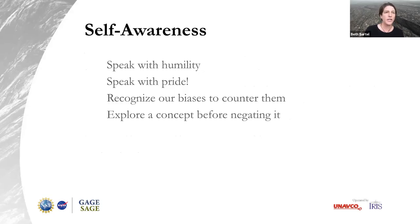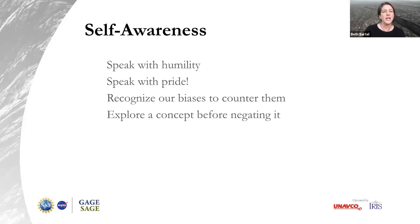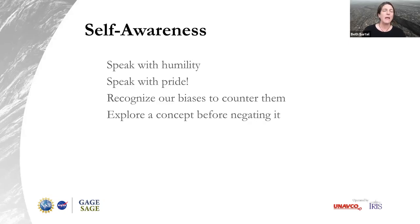Here's another way to build inclusion: speak with humility, and speak with pride — especially if speaking from an underrepresented identity. Recognize our biases to counter them — go do that Project Implicit quiz, then do the follow-on work to identify where those biases come up and how they affect our behavior, so we can catch ourselves and change. We can also explore a concept before negating it. If somebody tells us science is not a meritocracy, before we push back, we need to listen — are they talking about indigenous forms of knowledge? We need to go explore that before making a counterargument.